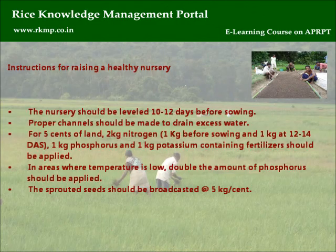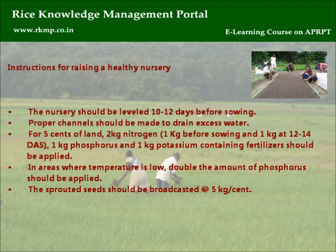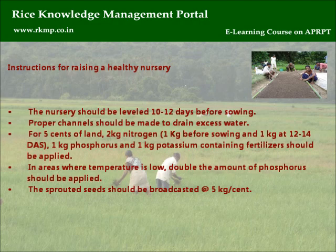Instructions for raising a healthy nursery: The nursery should be leveled 10 to 12 days before sowing. Proper channels should be made to drain excess water. For 5 cents of land, 2 kg nitrogen — that is 1 kg before sowing and 1 kg at 12 to 14 DAS — 1 kg phosphorus and 1 kg potassium-containing fertilizer should be applied. In areas where temperature is low, double the amount of phosphorus should be applied.